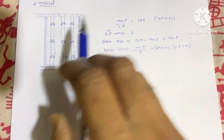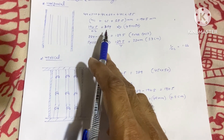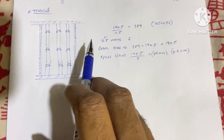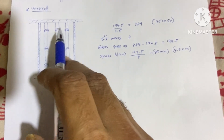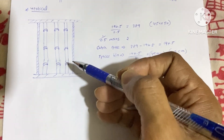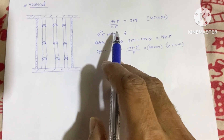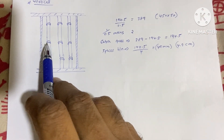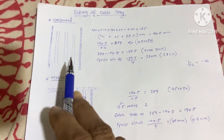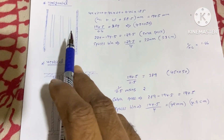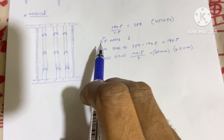You might be wondering why we use the 0.5 factor for vertical cable trays. For vertical cable laying, we are required to use cable cleats. When the cable tray passes through each floor, we need to install 3 cleats. On both sides of each cable, the cleat takes up 2.5cm of space. In the horizontal cable tray we used cable ties, but for vertical trays we need cable cleats — that is why we use the 0.5 factor, which provides extra space to accommodate them.